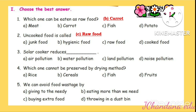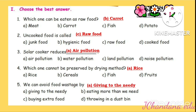Third question: Solar cooker reduces? The answer is option A: Air pollution. Fourth question: Which one cannot be preserved by the drying method? The answer is option A: Rice. Fifth question: We can avoid food wastage by? The answer is option A: Giving to the needy.